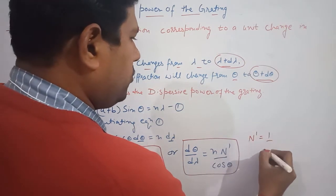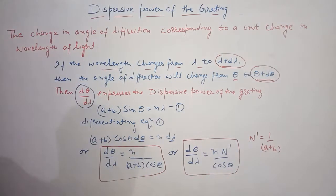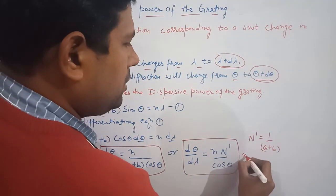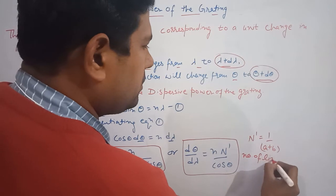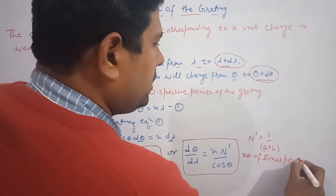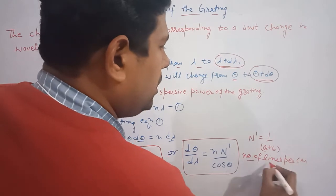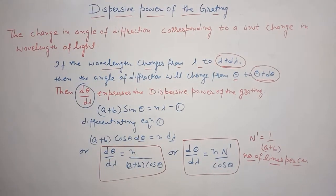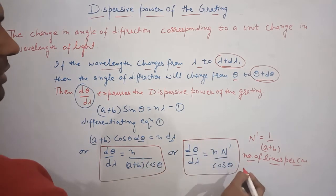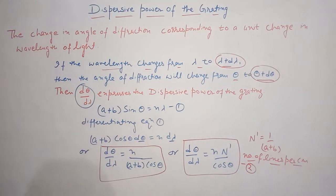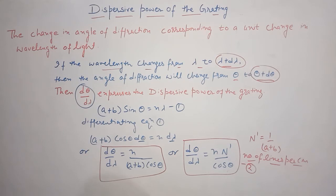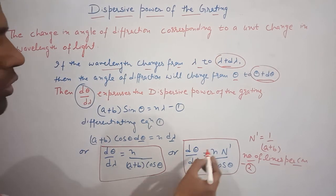Here N' is the number of lines per centimeter on the grating. From this equation — let's call it equation 2 — it is clear that the dispersive power of the grating increases with the increase in order of the spectrum.